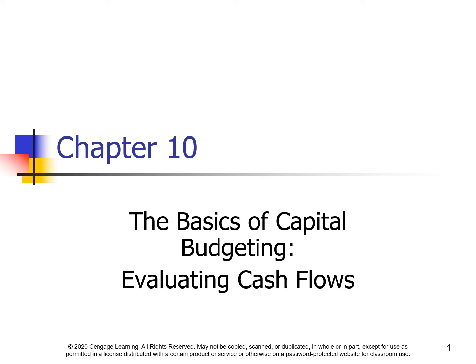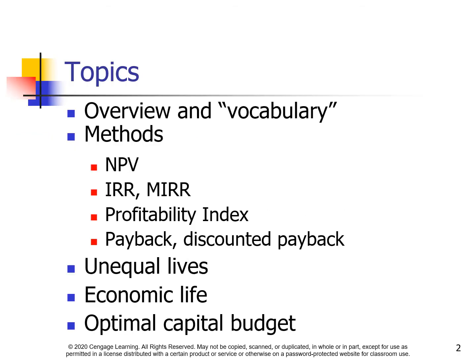Chapter 10: The Basics of Capital Budgeting — Evaluating Cash Flows. The topics in this chapter include overview and vocabulary, methods, net present value (NPV), internal rate of return (IRR), modified internal rate of return (MIRR), profitability index, payback, discounted payback, unequal life, economic life, and optimal capital budget.